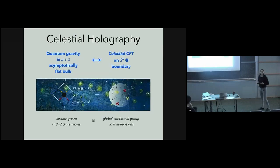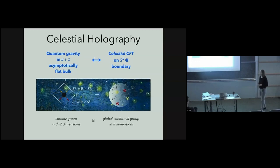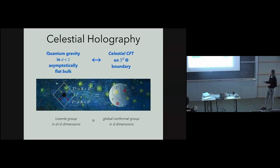Celestial holography suggests that quantum gravity in the bulk of asymptotically flat spacetimes has a dual description in terms of a theory that lives on the co-dimension two sphere at the boundary of the spacetime. We refer to this theory as celestial conformal field theory. The reason such a co-dimension two proposal has any reason to be put forward is that the Lorentz group in D plus two dimensions acts as the Euclidean global conformal group in D dimensions.